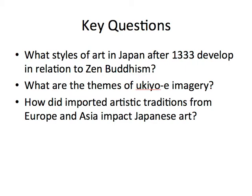We'll be looking today at how Zen Buddhism influenced the development of styles of art in Japan after 1333. We'll also be looking at the themes of ukiyo-e imagery — ukiyo means floating world — related to the sensual pleasures of life and the Buddhist realization that life is fleeting and temporary. We'll also look at imported artistic traditions from Europe and Asia, particularly Chinese art, and how they impacted Japanese art.